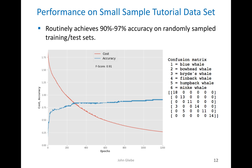In terms of performance, this neural network performs pretty well. It routinely achieves 90% to 97% accuracy on randomly sampled training and test sets. As you can see in the confusion matrix, it does well on this small sample. With 70% used for training and 30% for testing, there should be 90 samples in that matrix, and it gets most of them right.